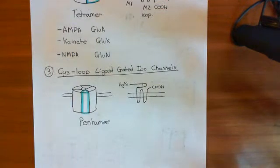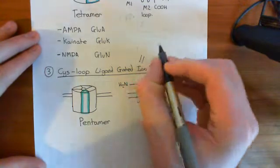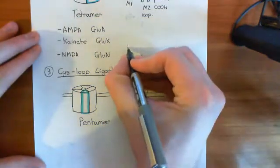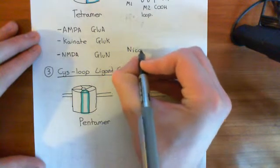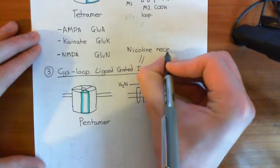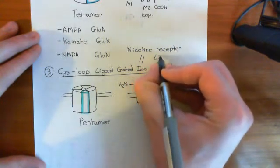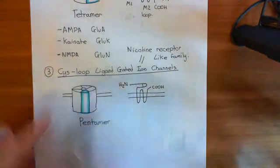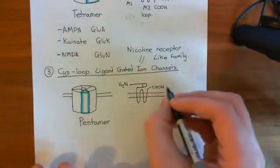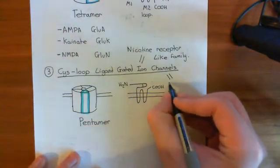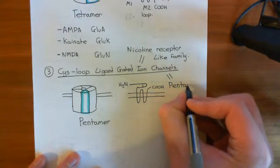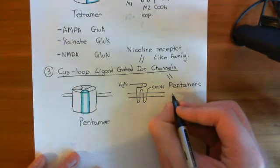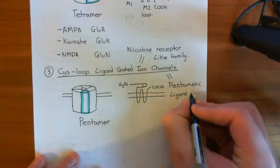The cis-loop ligand-gated ion channels also have another name. In the same spirit as the P2X receptor-like family and the glutamate receptor-like family, it's named after an example — the nicotinic acetylcholine receptor. So it's also named the nicotine receptor-like family. Because of the controversy over the fact that the P2X receptor-like family may have a better claim to the cis-loop title, people are also trying to rename them as the pentameric ligand-gated ion channels, since they are the only ligand-gated ion channels with five subunits.